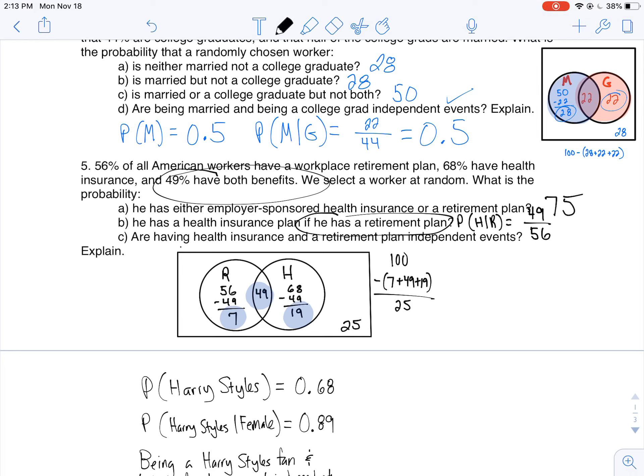Now it's asking me if having health insurance and a retirement plan are independent events. Explain. Here's what I can do. There are a lot of ways you can go about doing this. I'm gonna show you several different ways you can prove independence. One way: if they're independent events, the probability of one times the probability of the other should give me the probability of both.